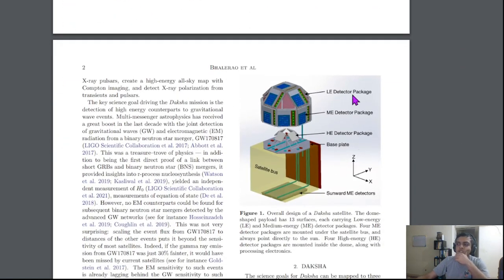If you see, this is the proposed CAD, how one of the two satellites would look like. They would be at the antipodes in the orbit. This is the electronics and instruments that would be sitting on board: a low energy package, medium energy package, and high energy package.